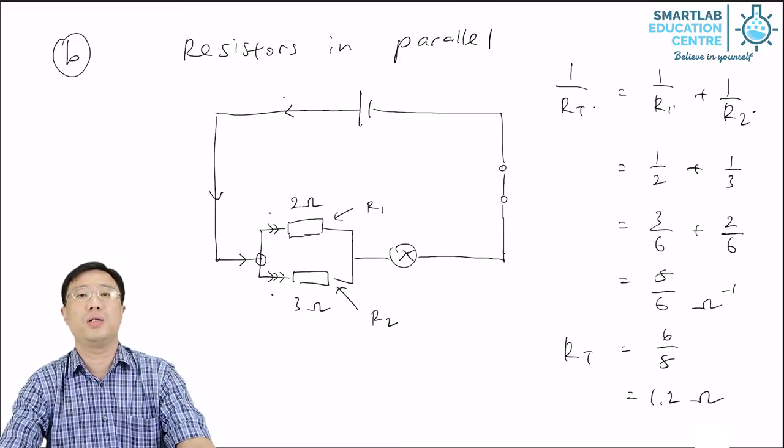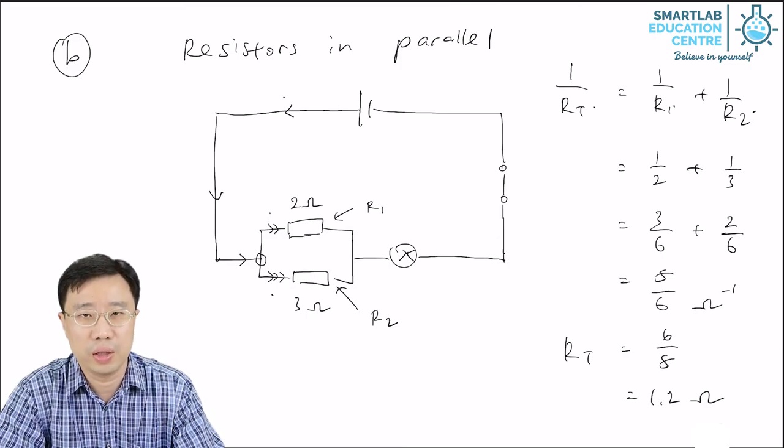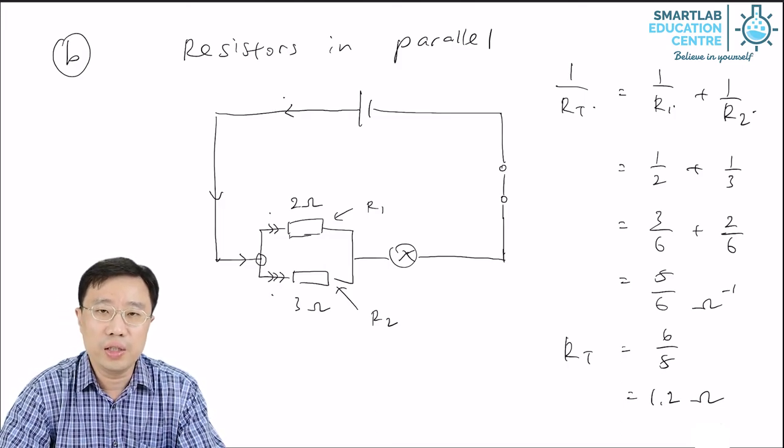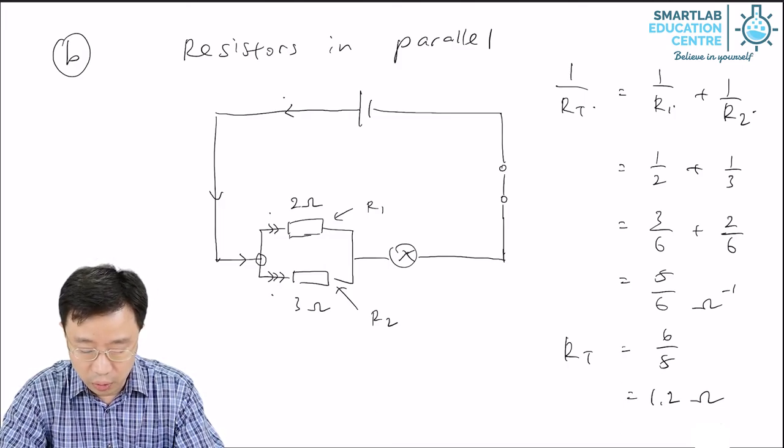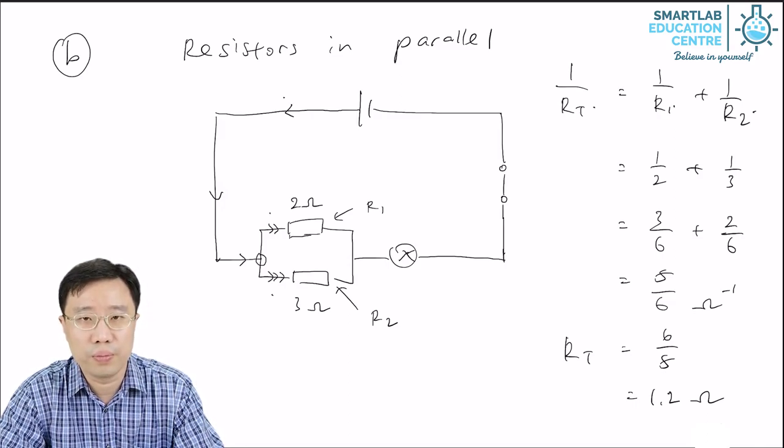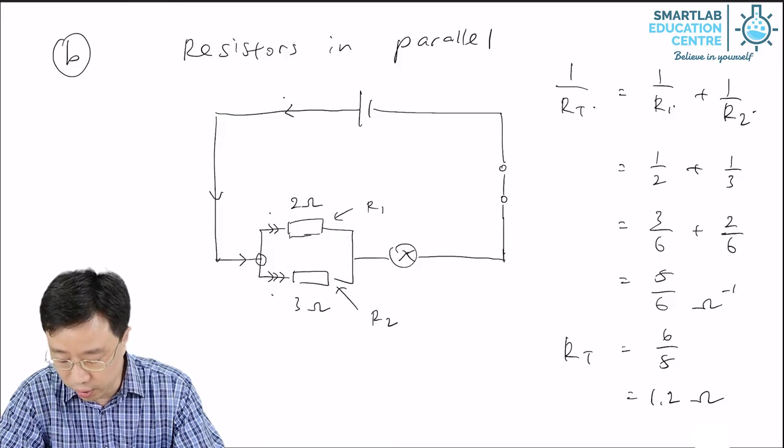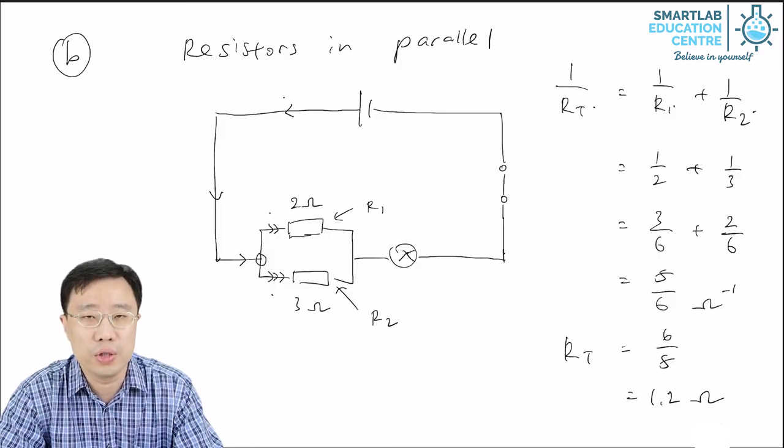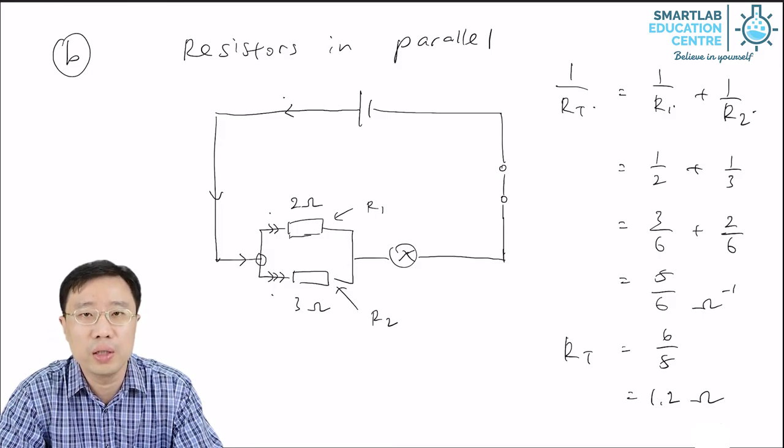Now something you have to note when calculating total resistance. In this case, notice that R1 is 2 Ohm, R2 is 3 Ohm. Now, the final answer is 1.2 Ohm, which is less than both R1 and R2.